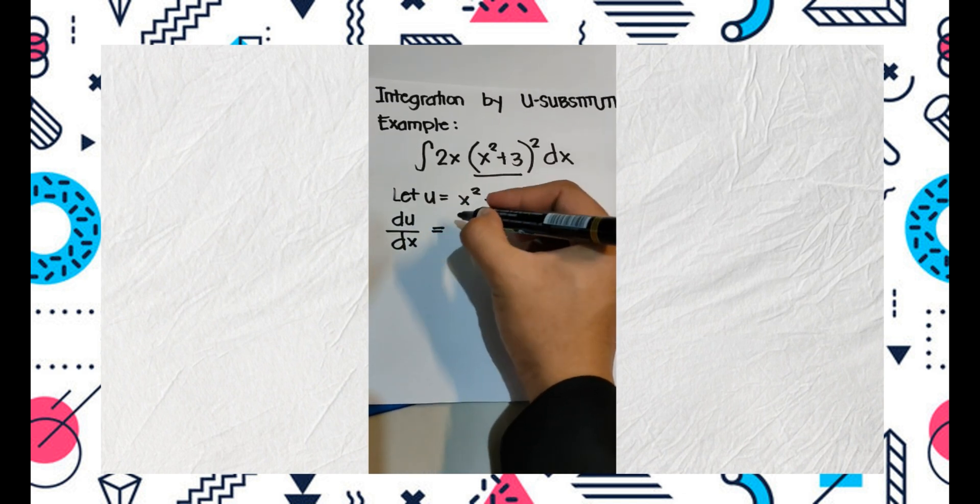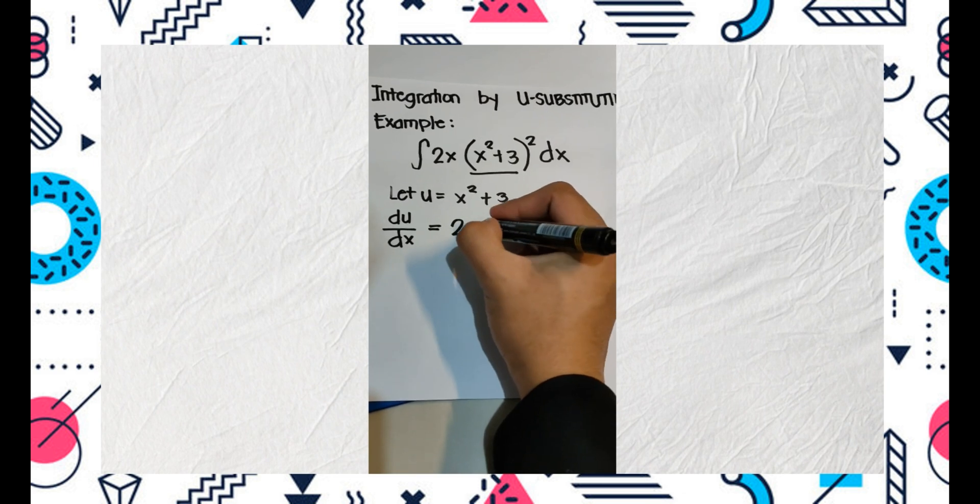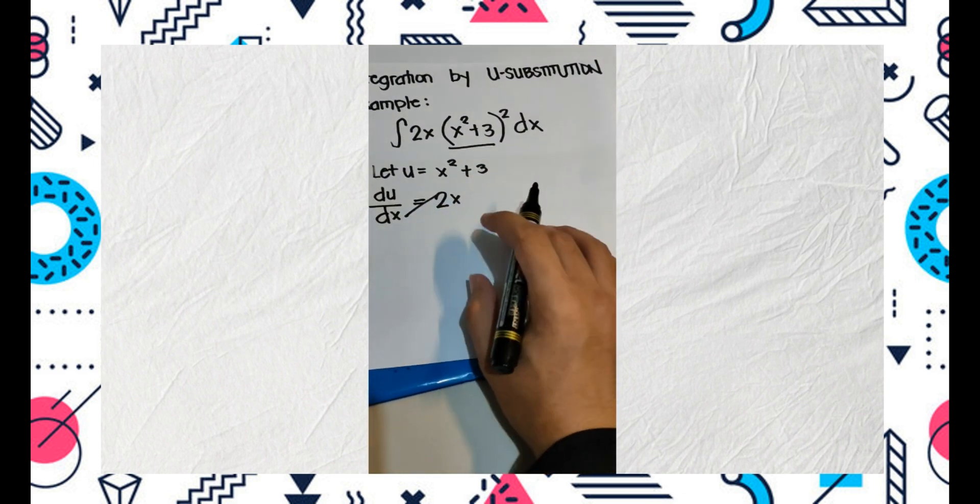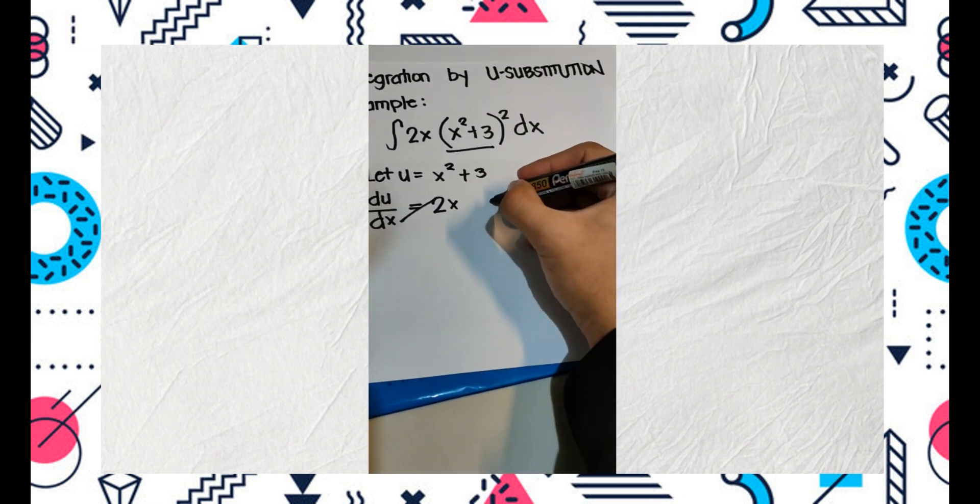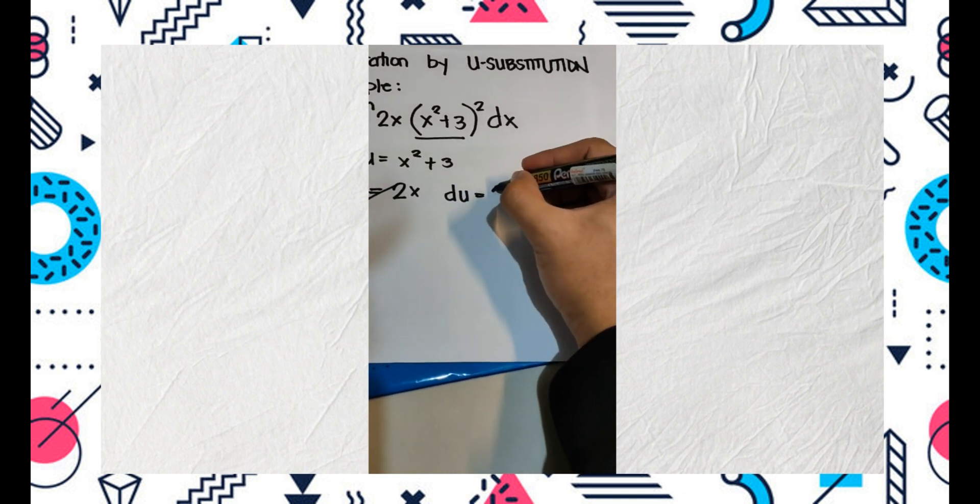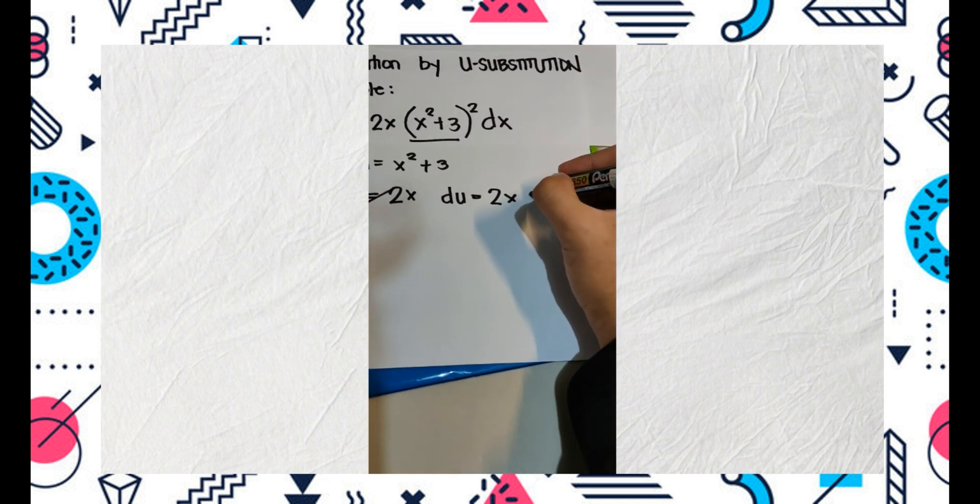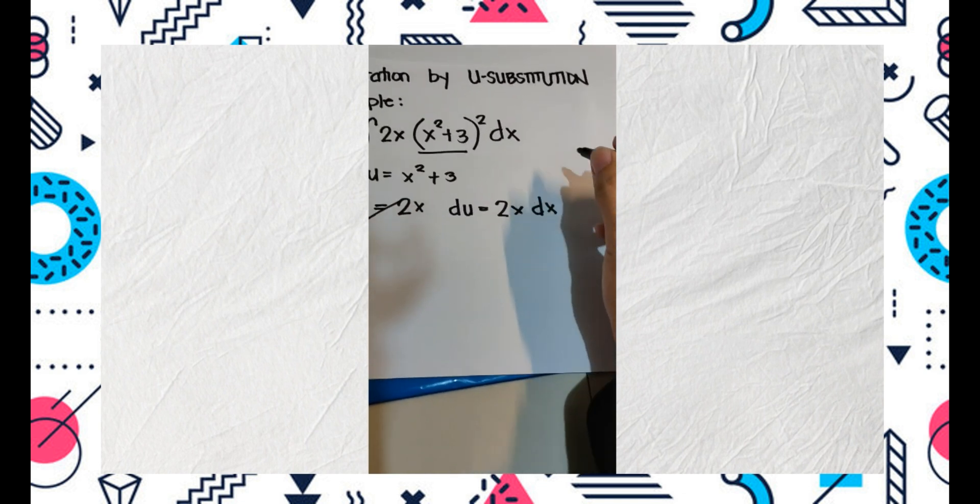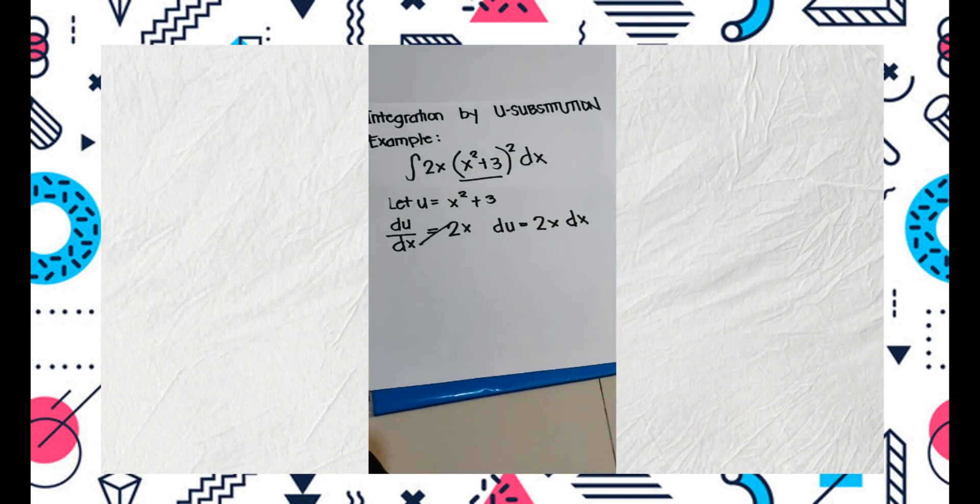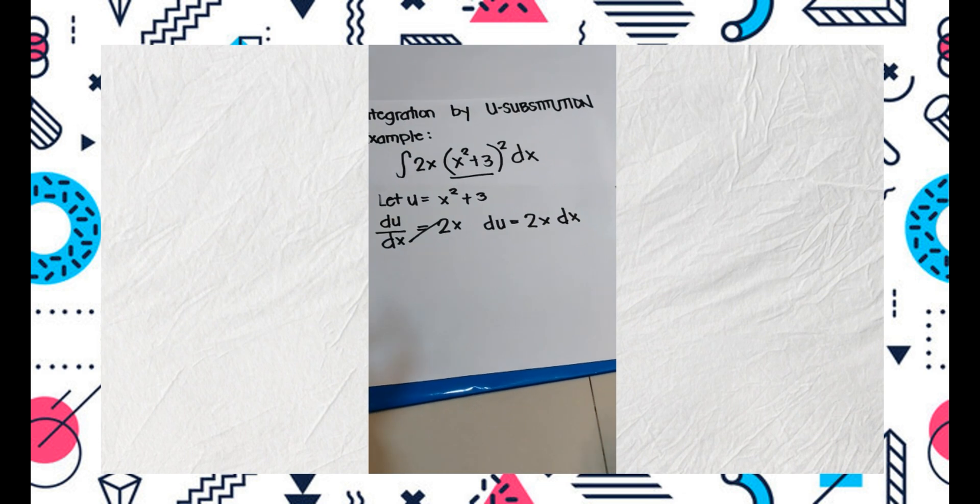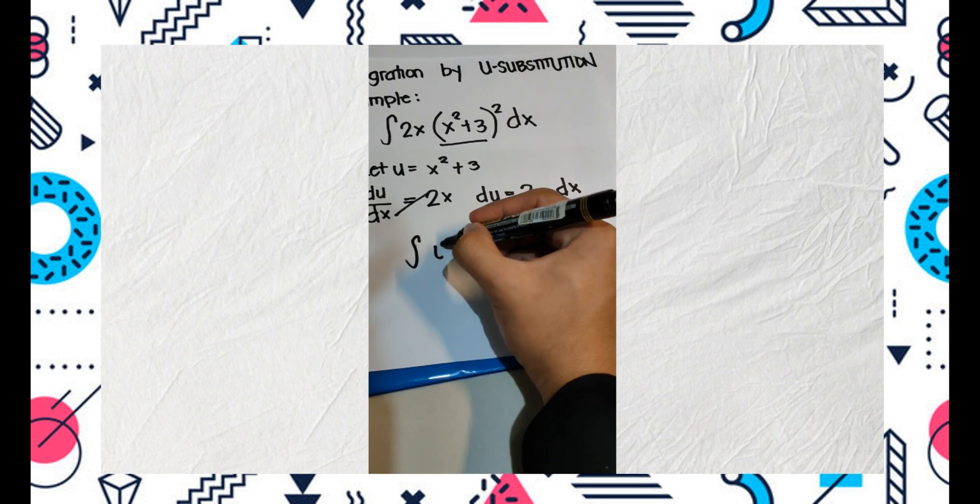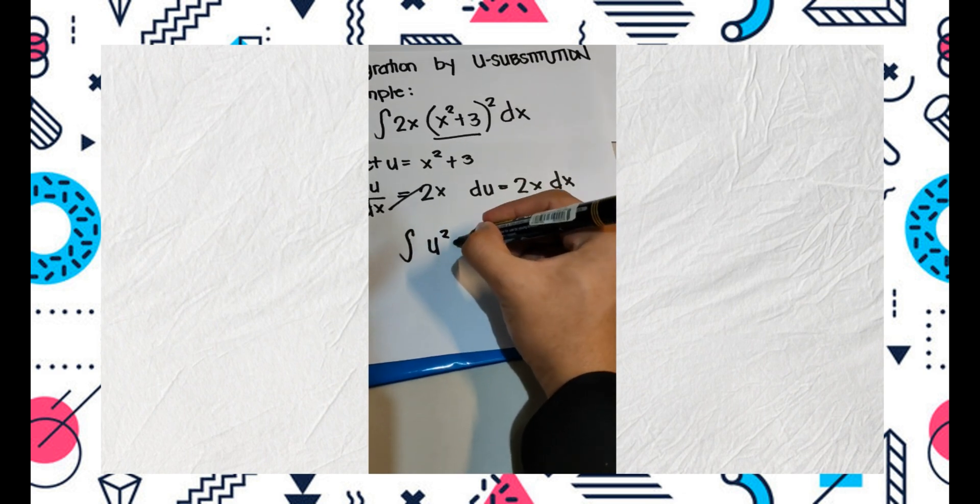Get the derivative of u. du over dx is equals to 2x, then cross multiply. So du is equals to 2x dx.